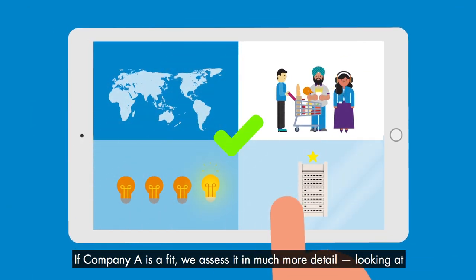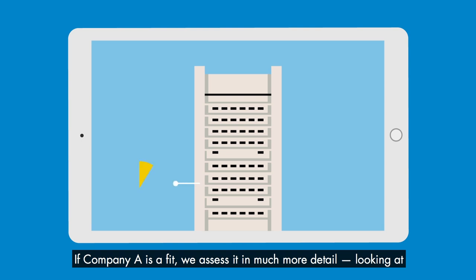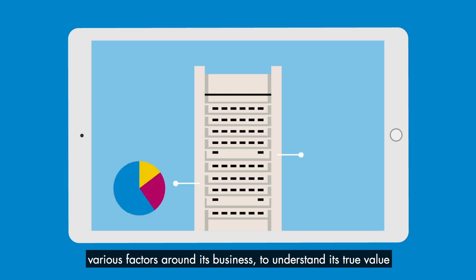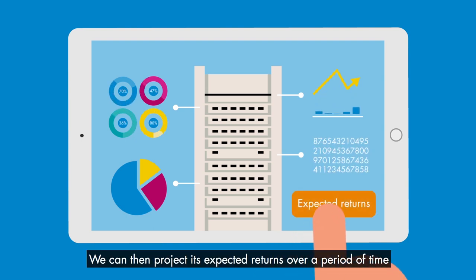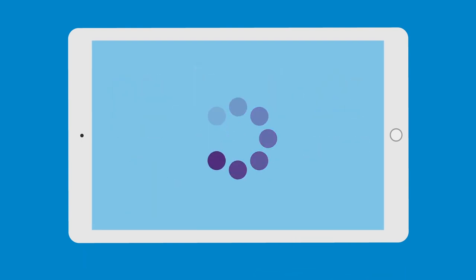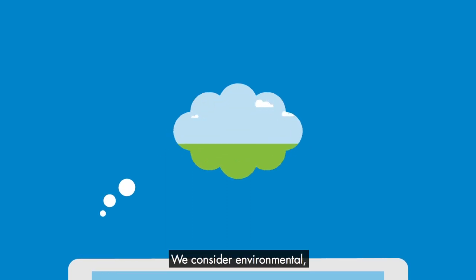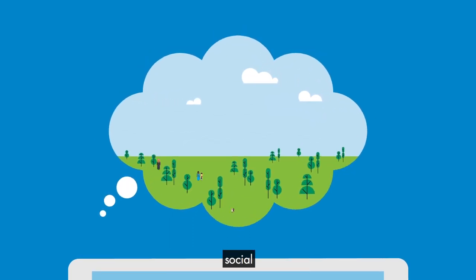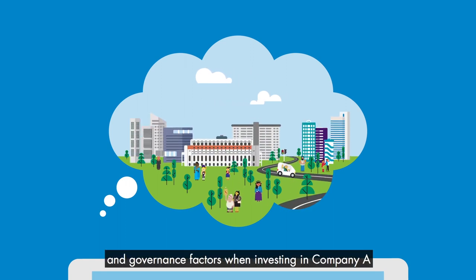If Company A is a fit, we assess it in much more detail, looking at various factors around its business to understand its true value. We can then project its expected returns over a period of time. But it's not just about returns — we also consider environmental, social and governance factors when investing in Company A.